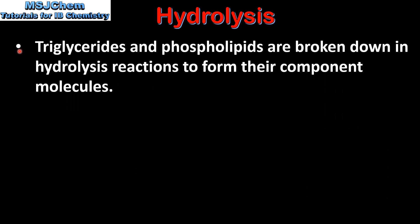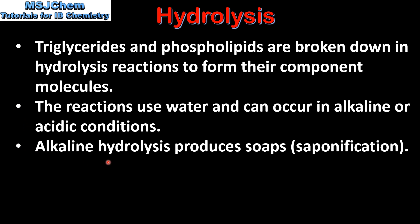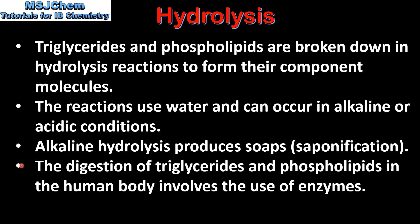Let's end with a summary. Triglycerides and phospholipids are broken down in hydrolysis reactions to form their component molecules. The reactions use water and can occur in alkaline or acidic conditions. Alkaline hydrolysis produces soaps in a process called saponification. The digestion of triglycerides and phospholipids in the human body involves the use of enzymes.